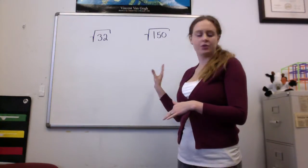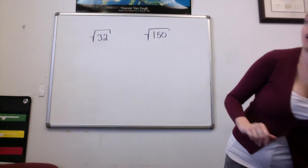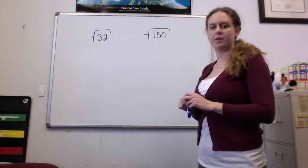Alright, I want to discuss how to reduce square roots. I have two square roots up here: the square root of 32 and the square root of 150.